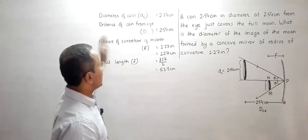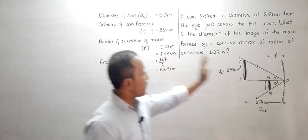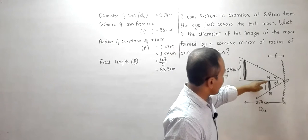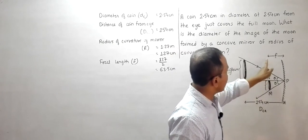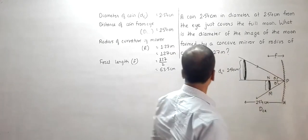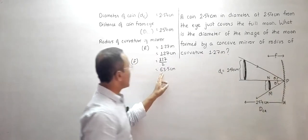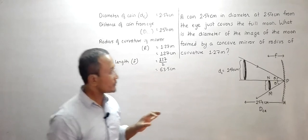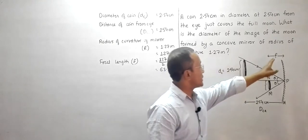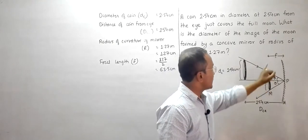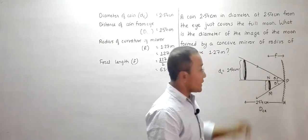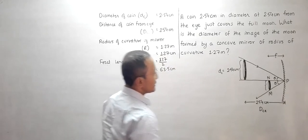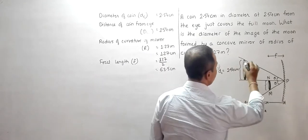Since the moon can be considered to be at infinity, its image is formed at the focus. So the image distance equals f = 63.5 centimeters.